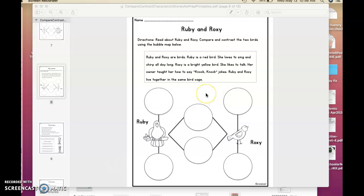We're still talking about the differences and the similarities. On this side where you have Ruby with the two circles, you're going to talk about Ruby and how she is different than Roxy.